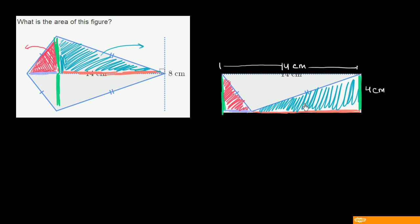We know how to find the area of this. This is 4 centimeters times 14 centimeters. So the area equals 4 centimeters times 14 centimeters, which equals—let's see, that's 40 plus 16—56 square centimeters.